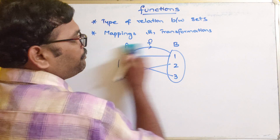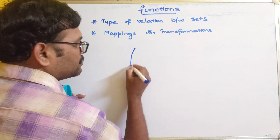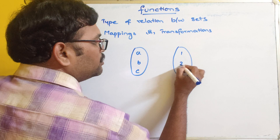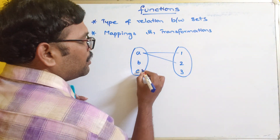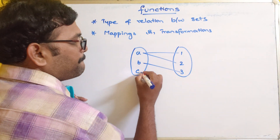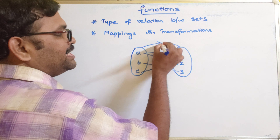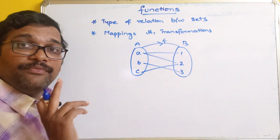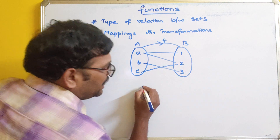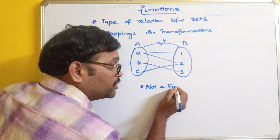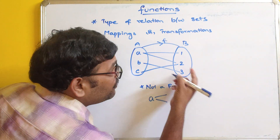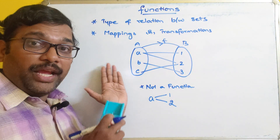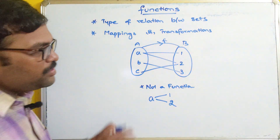Let us take one more example with the same elements: A, B, C and 1, 2, 3. Observe the definition of function — every element of A should be associated with exactly one element. Here A is associated with both 1 and 2, meaning A is associated with two elements. That should not happen. So this is not a function.